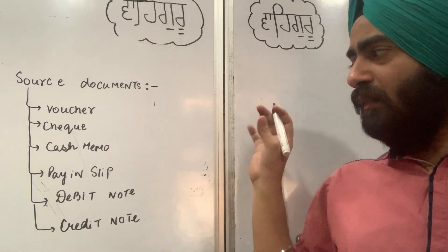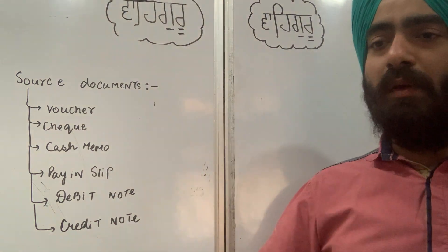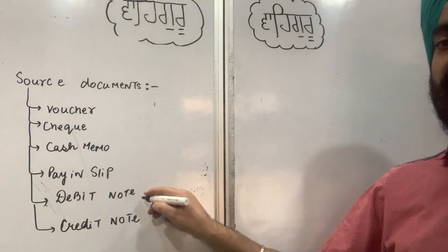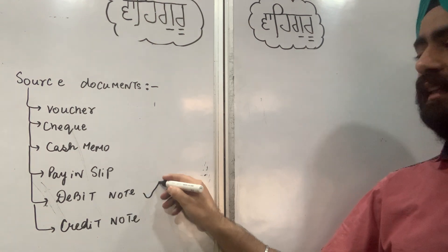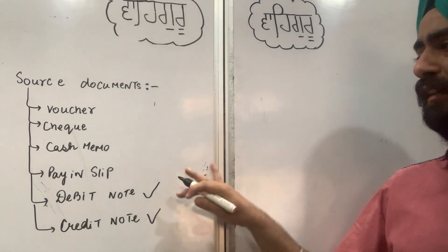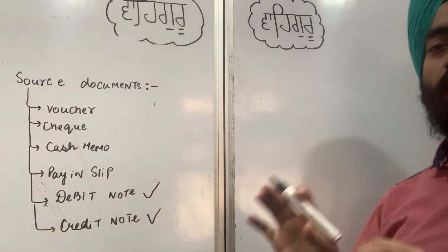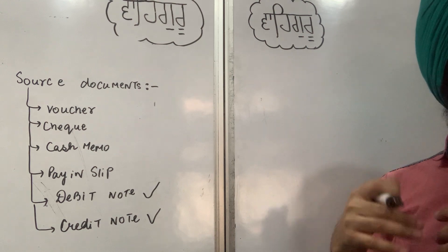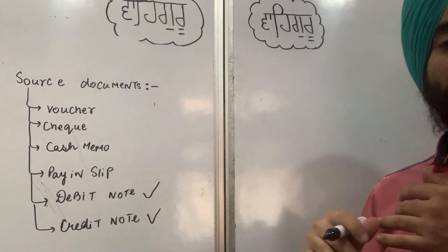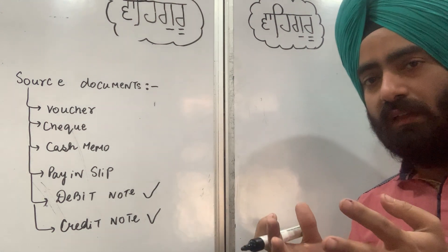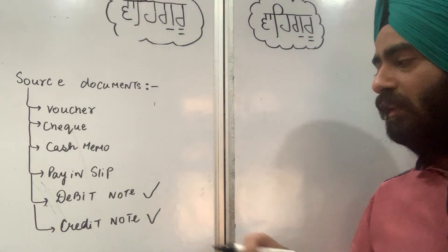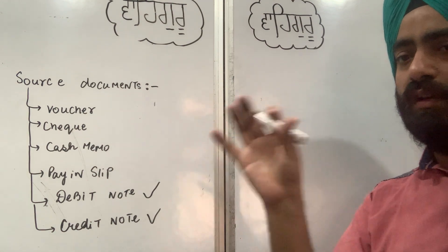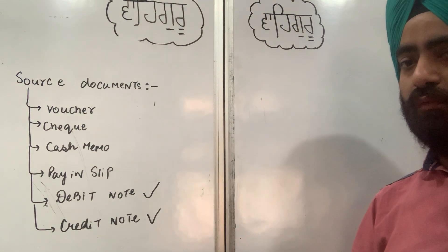The most important source documents that frequently appear in exams are debit note and credit note. Debit note banta hai jab kabhi purchase return ka proof dena ho — debit note hoga. Sales return jab hoti hai, uska proof credit note hoga.